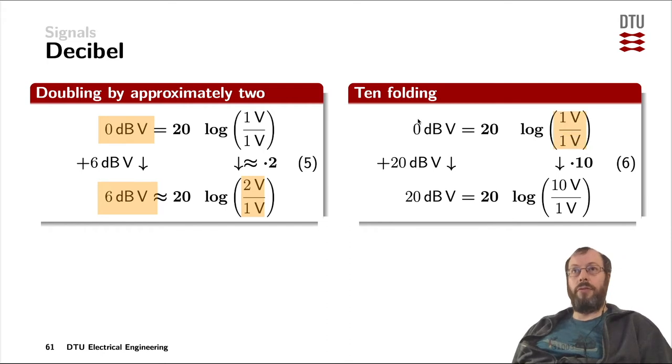Similar for tenfolding: you start out with one volt at zero dB volts. If you tenfold your voltage, amplifying by a factor of 10, you would get an addition of plus 20 dB volts. If you tenfold again, you'll get another 20 dB volts. Tenfolding three times would be a factor of 1000, giving you plus 60 dB volts.